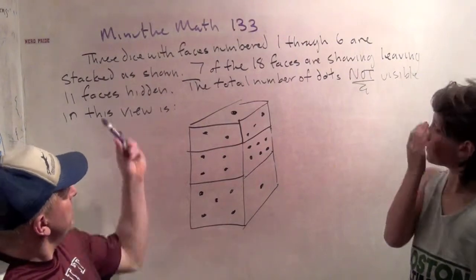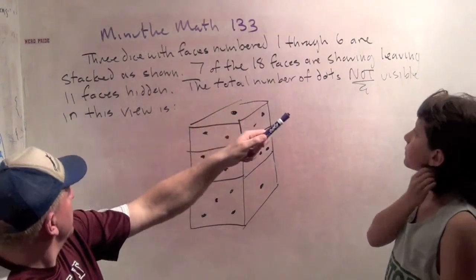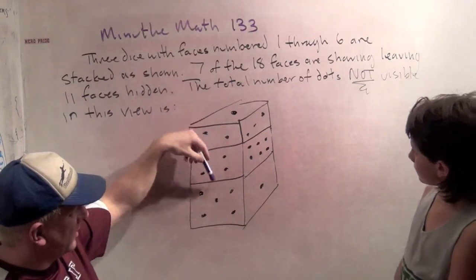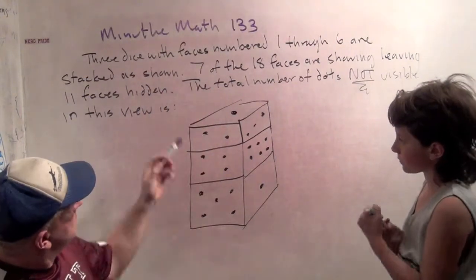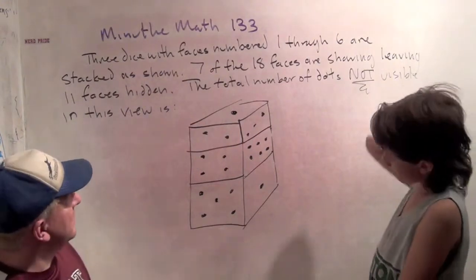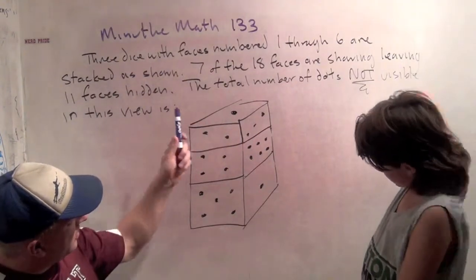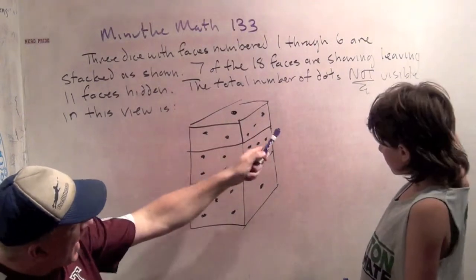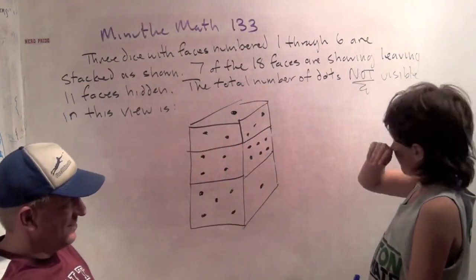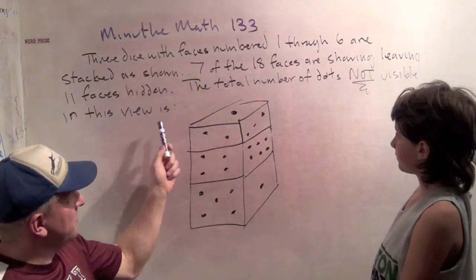This is a really cool problem from the Mathematical Association of America's Minute Math page. Three dice with faces numbered 1 through 6 are stacked as shown, just like regular dice. 7 of the 18 faces are shown, leaving 11 faces hidden. The total number of dots not visible in this view is what?